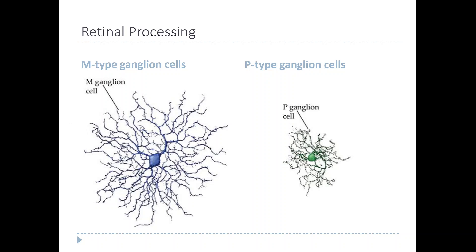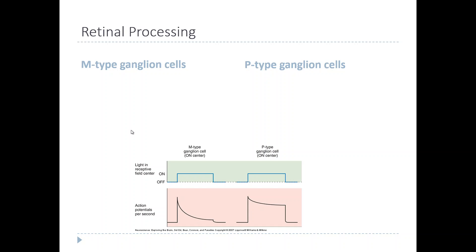The main difference you can see right off the bat is that the M-type ganglion cells are bigger and have a large distribution of dendrites, whereas the P-type ganglion cells are smaller and their dendrites cover a smaller area. There are way more P-type ganglion cells than M-type ganglion cells, which makes sense given that the M-type cells cover a wider area.